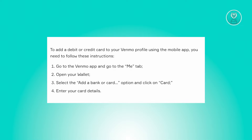Head over to the Venmo application and navigate to the Me tab or section. Access your wallet, then opt for the add a bank or card option and choose card. Now input your card information accordingly — that includes your card number, expiration date, and the CVV or CVC, and your postal code.